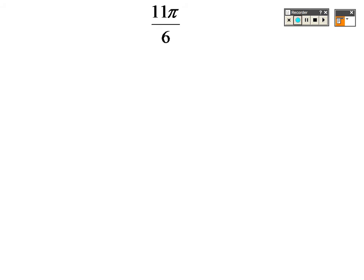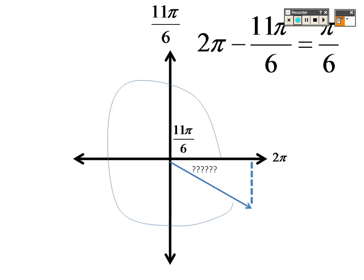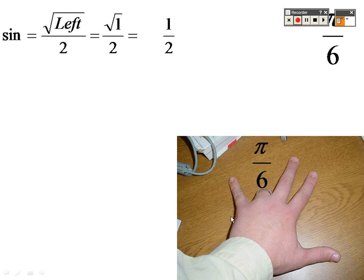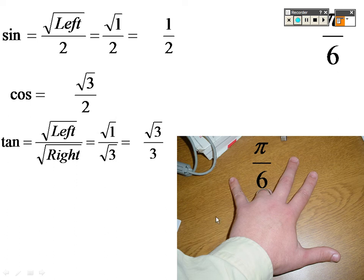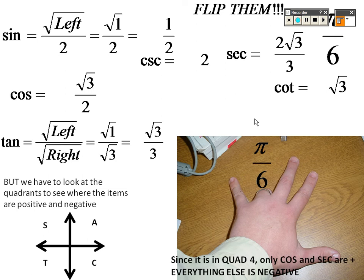11π/6 — the reference angle is π/6. To prove it: 2π minus 11π/6 gives π/6, and π/6 is your 30-degree finger. So sine is √1/2, cosine is √3/2, and tangent is √1/√3, which is √3/3. Flip them: cosecant is 2, secant is 2√3/3, cotangent is √3. In quadrant 4, only cosine is positive, so secant is also positive, but sine, tangent, cosecant, and cotangent are all negative.